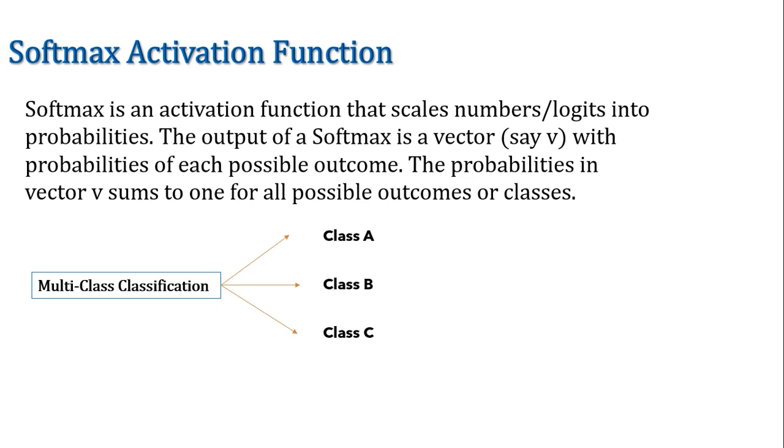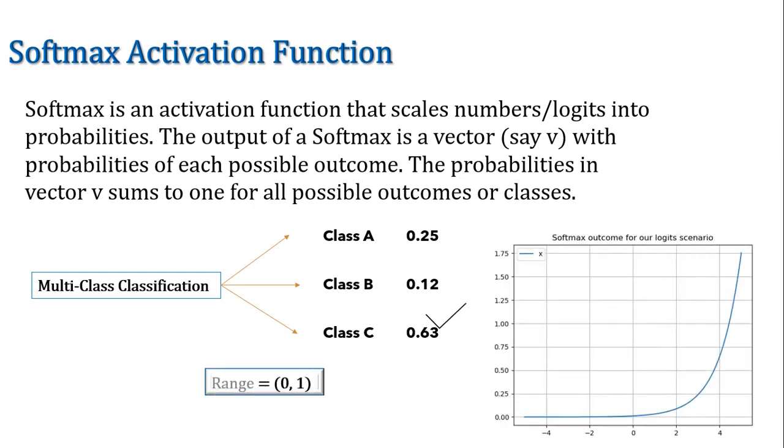Now we have created neural network and then we have applied this activation function at last layer for getting the output. So we will get the output in terms of probability matrix as shown on the screen. Class A with probability of 0.25, Class B with probability of 0.12, and then class C with probability of 0.63. So according to this result our prediction would be class C, as it is showing the highest relevance probability for this particular class. Now again range for this will be 0 to 1 only.